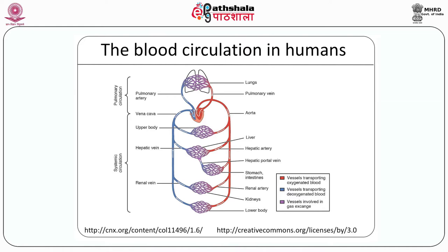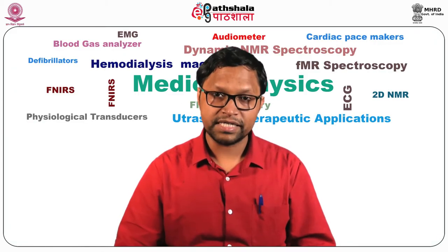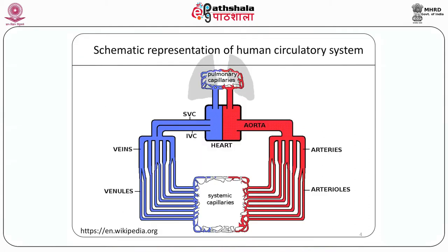The blood circulation includes a set of pump and large series of connected vessels called the arteries and veins. The left side of the heart pumps the blood through the arteries to the entire body, which then returns back to the right side of the heart through the veins. The upper portion shows the pulmonary circulation. We can divide the human circulation into two compartments: the systemic compartment, which is comprised of circulation to all the organs except the lungs, and the pulmonary circulation, which is a low-pressure compartment.